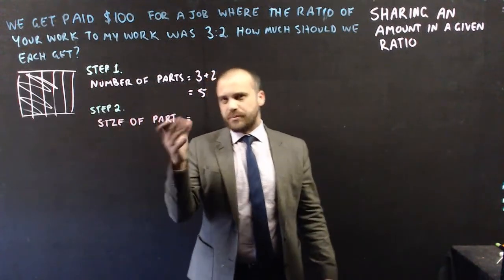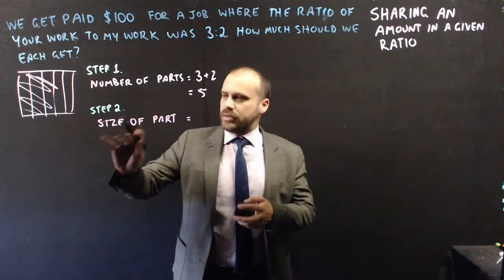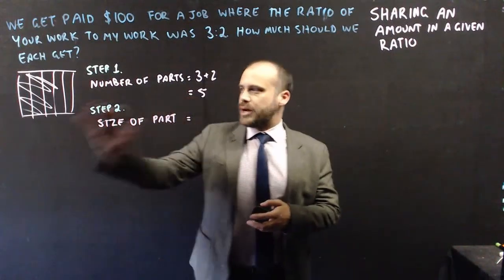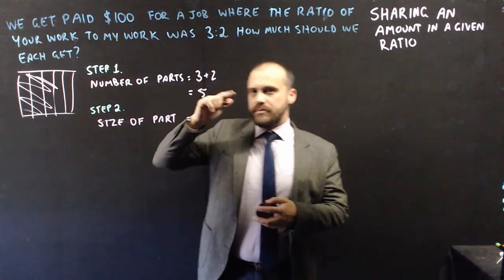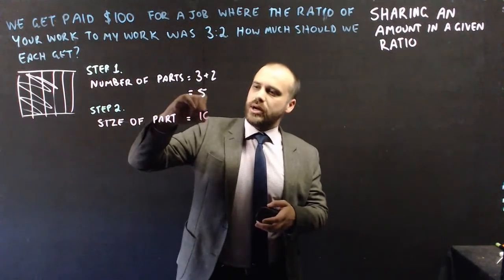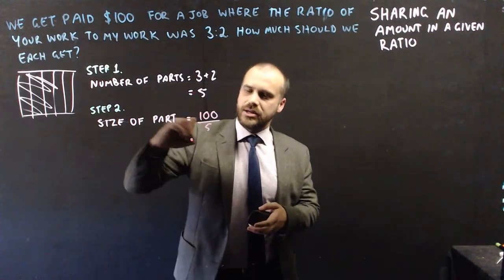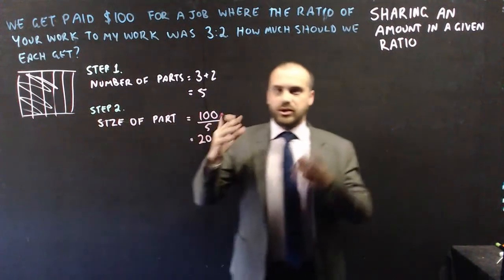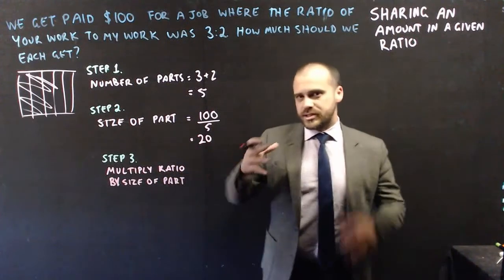Step 2 is to find the size of each part — meaning the amount of money per part. If there are 5 parts in total and we're getting paid $100, then the amount of money for each part is $100 divided by 5. 100 divided by 5 is 20, so each of these strips is going to pay us $20.